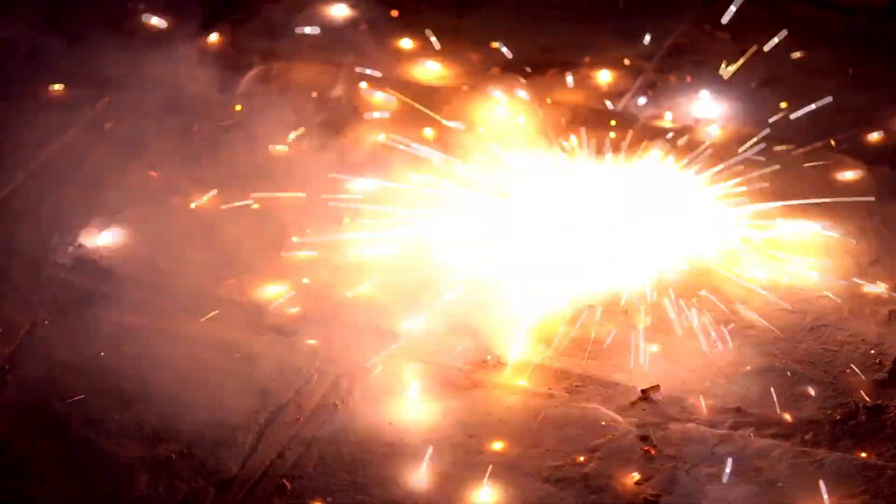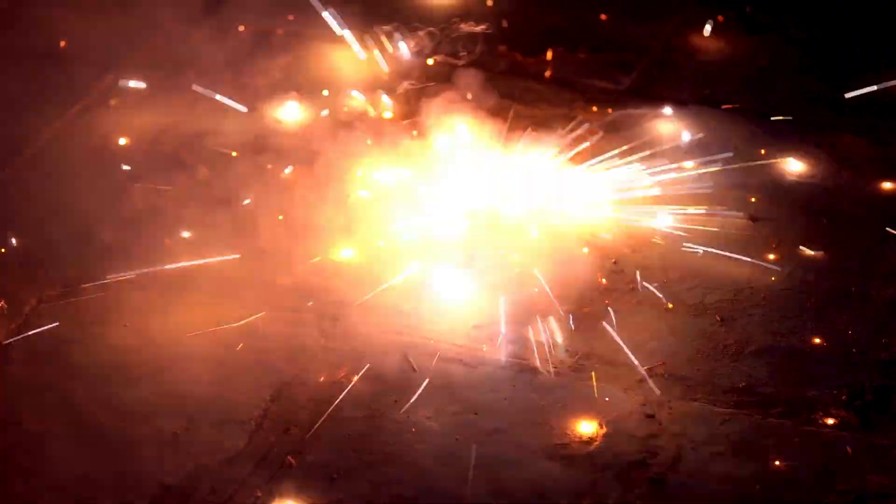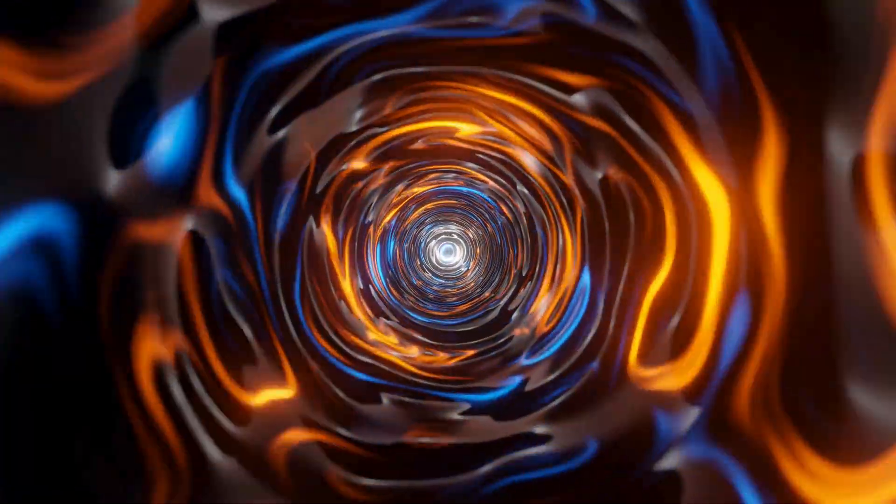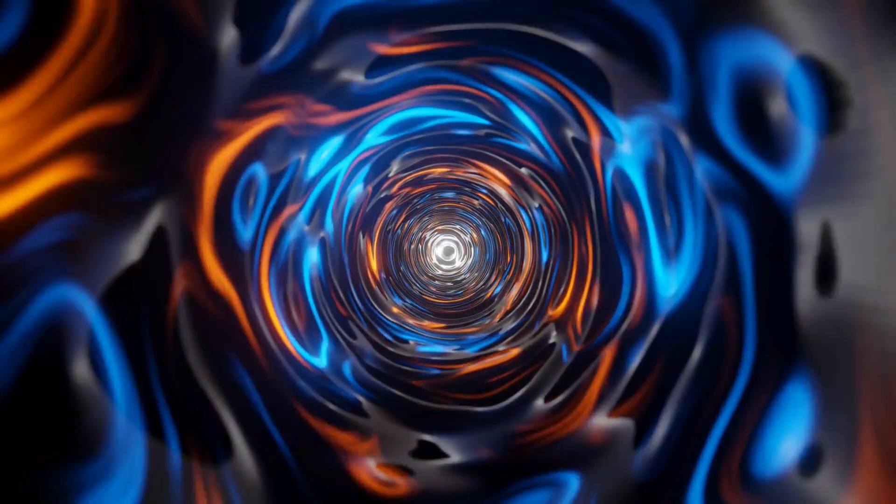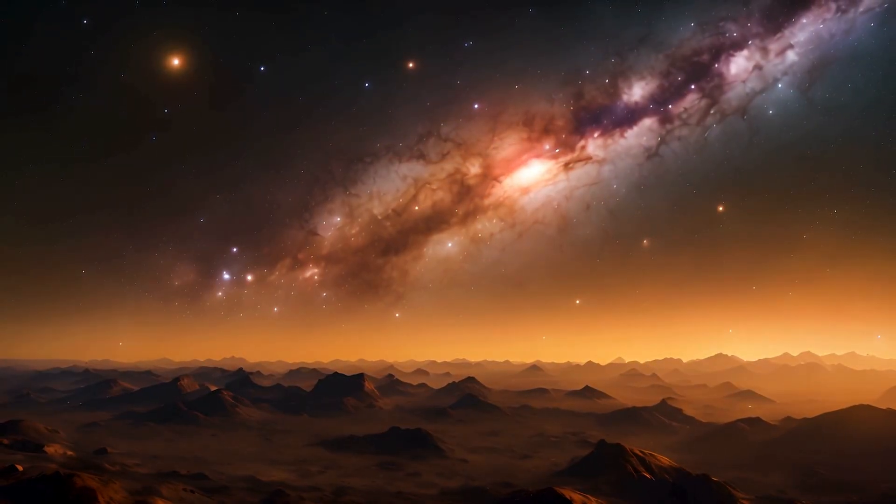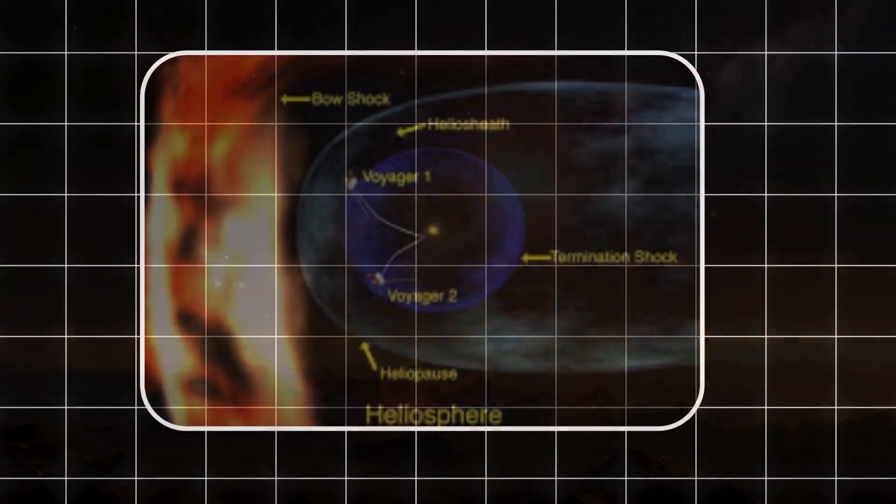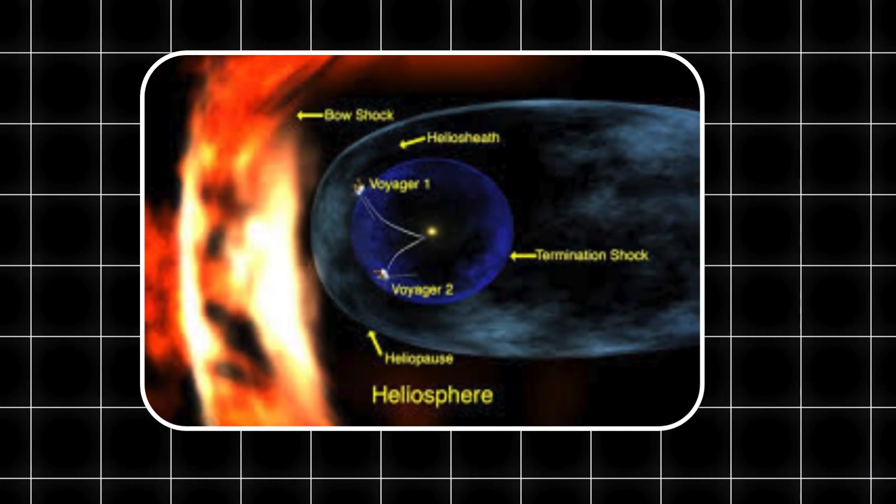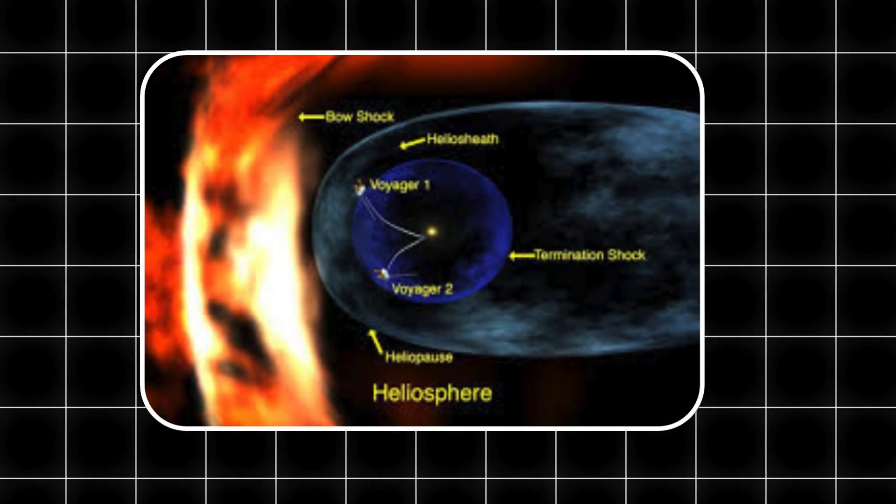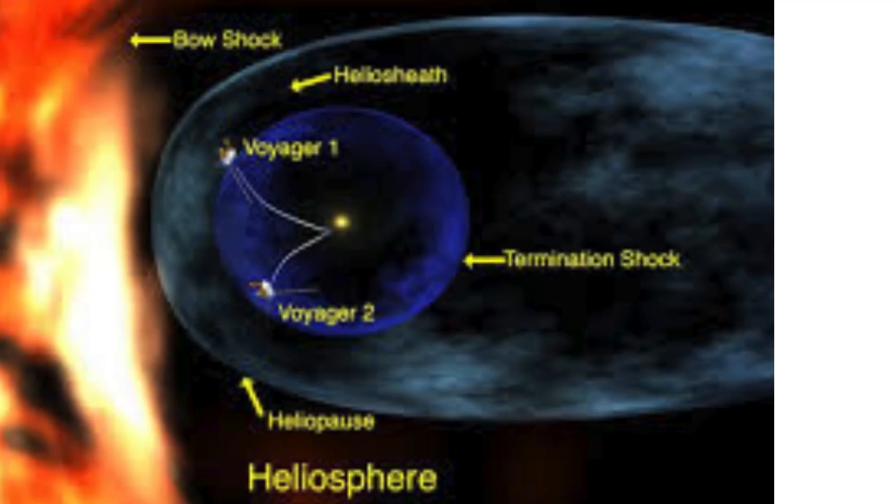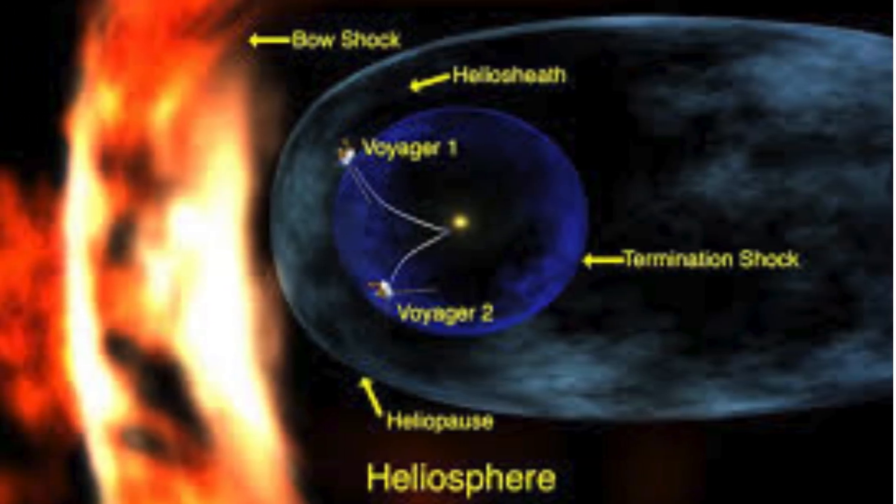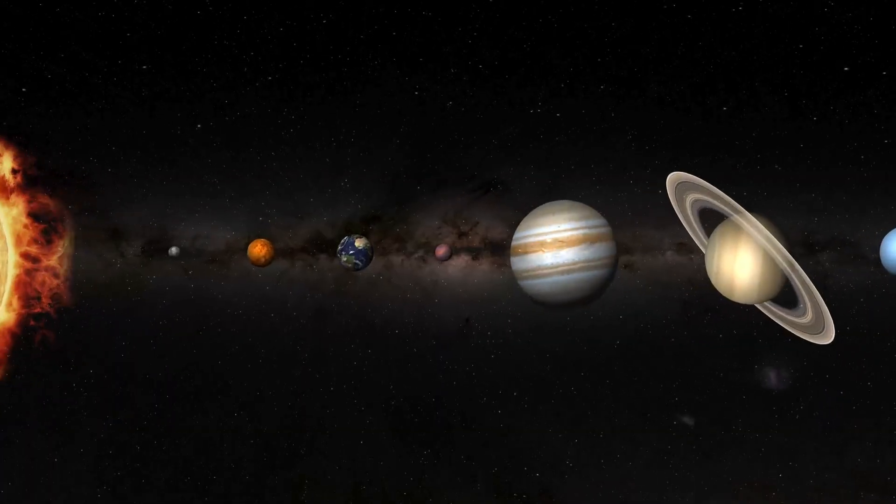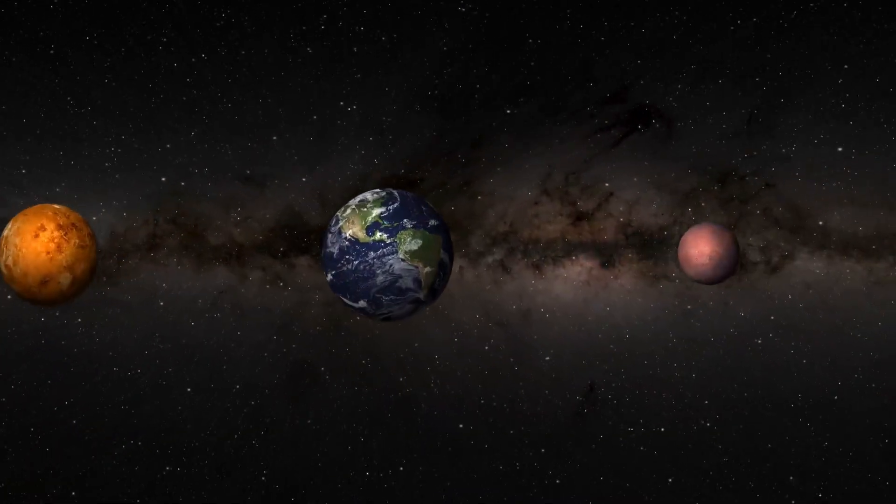Beyond the heliopause, the interstellar magnetic field aligns unexpectedly with the sun's own field within the heliosphere. This alignment defies earlier models, which assumed the galaxy's magnetic structure would differ sharply from our star's. Instead, the data hint at a profound connection, as if the sun's influence subtly sculpts the interstellar medium, or perhaps the galaxy imposes its own order on the solar system's edge.